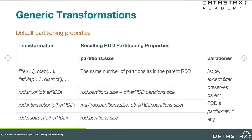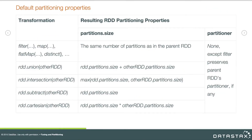When using a generic transformation to create a new RDD from a source RDD, the number of partitions and the partitioner can both change. By default, transformations like filter, map, flatMap, and distinct will produce the same number of partitions as in the parent RDD. They'll also produce a partitioner of none, except in the case of filter, which preserves its parent RDD's partitioner if it had one. You'll want to keep these rules as a reference when optimizing your own Spark applications.